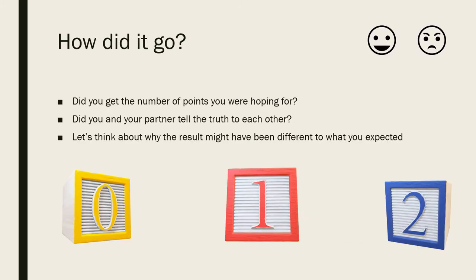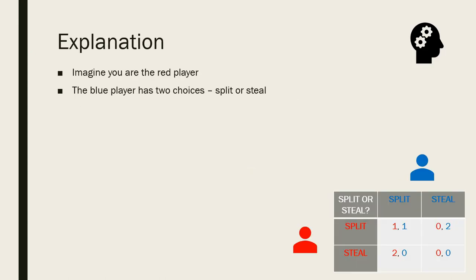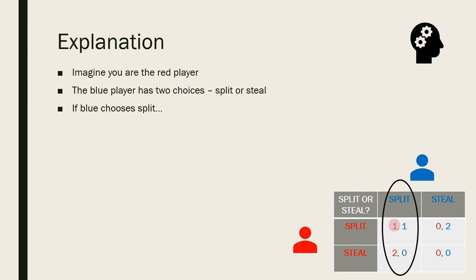How did it go? Did you get the number of points you were hoping for? Did you and your partner tell the truth to each other? Let's think about why the result might have been different to what you expected. Imagine you are the red player. Your opponent, the blue player, has two choices: Split or Steal. If blue chooses Split, you could either choose Split and win one point, or you could choose Steal and win two points. Two points is better than one, so you would choose Steal.